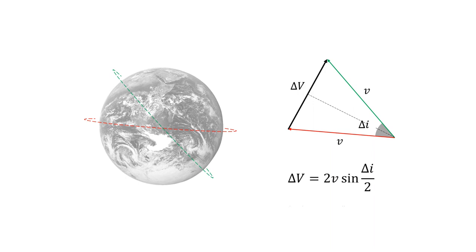The formula for the delta-v for a simple plane change maneuver is expressed as follows.